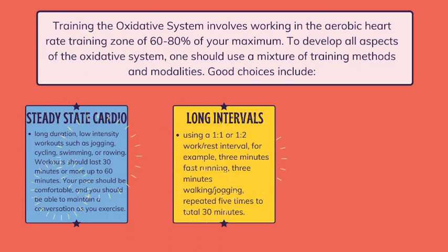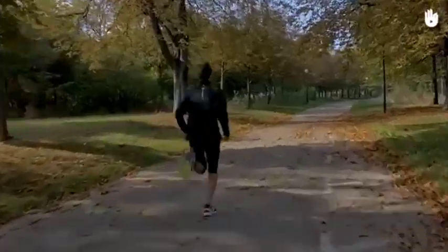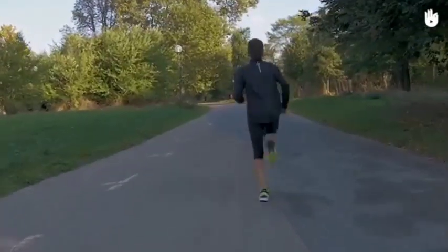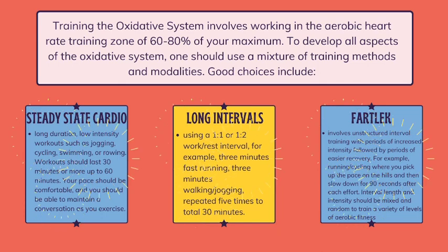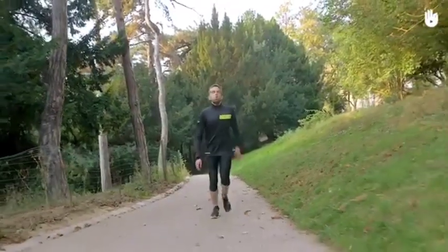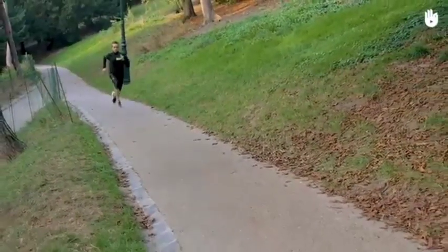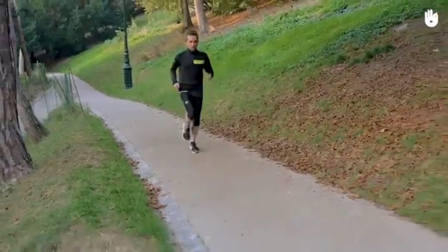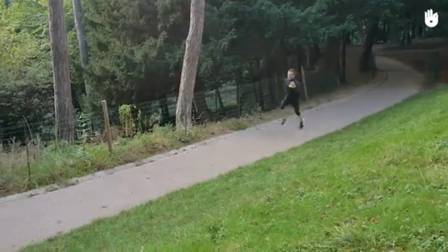Number 2, long intervals — using a one-to-one or one-to-two work-rest interval, for example three minutes of fast running followed by three minutes of walking or jogging, repeated five times to total 30 minutes. Number 3, the fartlek — an unstructured interval training session with periods of increased intensity followed by periods of easier recovery. For example, running or cycling where you pick up the pace on the uphills and then slow down for 90 seconds after each effort. The total length and intensity should be mixed and random to train a variety of levels of aerobic fitness.